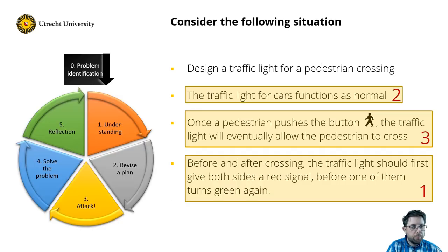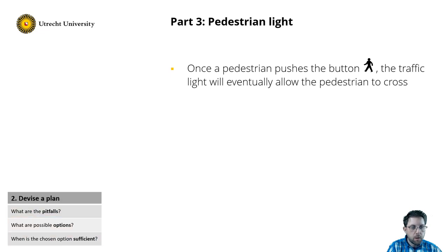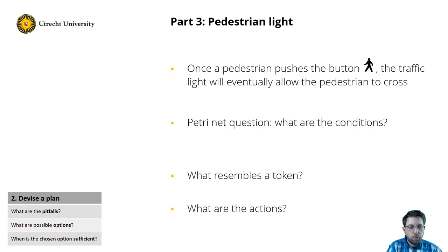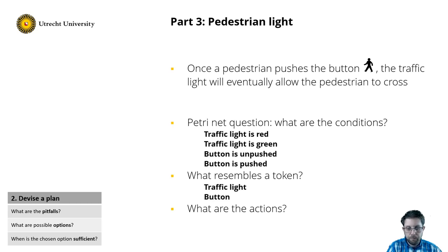Now that we've finished the first two parts, let's have a look at part 3, the pedestrian. Once a pedestrian pushes the button, the traffic light will eventually allow the pedestrian to cross. I skip the understanding phase and move to devise a plan. Again we ask ourselves 3 Petri Net questions: what are the conditions? What do the tokens resemble? And what are the actions? In this case we have conditions for the traffic light being red or green, but we also have conditions for the button being pushed or unpushed. That means that our tokens resemble two things: a traffic light or a button.